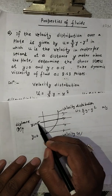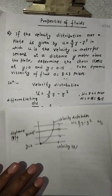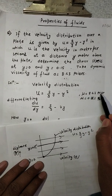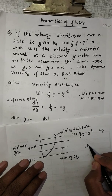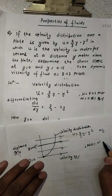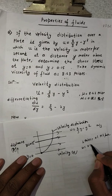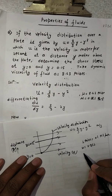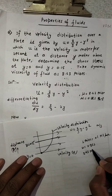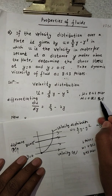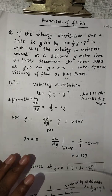At y = 0 we have to find the shear stress. The dynamic viscosity value is given: μ = 8.63 poise. We know that 1 poise = 0.1 N·s/m², so 8.63 poise = 0.863 N·s/m². Therefore μ = 0.863 Pascal·second.